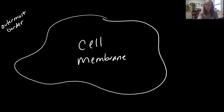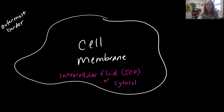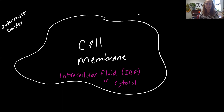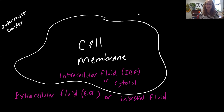The signature job of the cell membrane is to regulate what gets in and out of the cell. It makes a border, keeping the fluid inside the cell separate from the fluid outside. The fluid inside the cell is called the intracellular fluid, abbreviated ICF — or we can use the term cytosol. All of the fluid surrounding the cell is called the extracellular fluid, or ECF. In the human body, we can also call that fluid surrounding the cell the interstitial fluid.